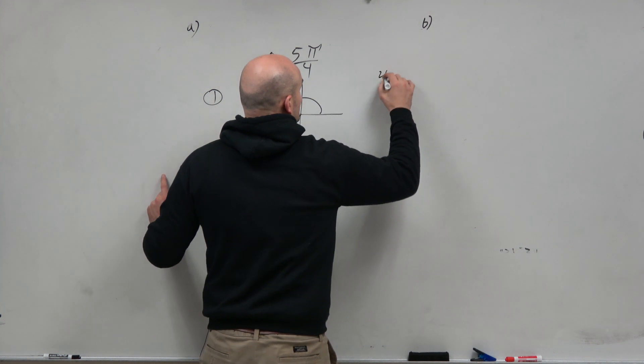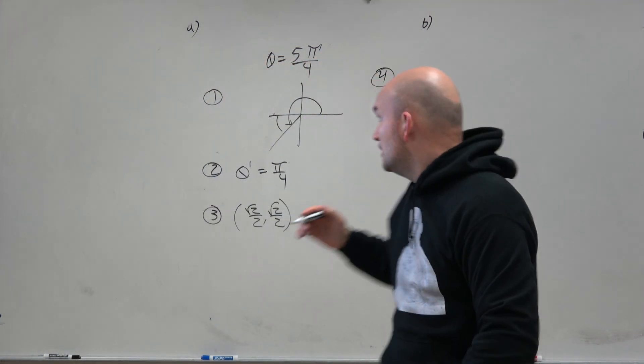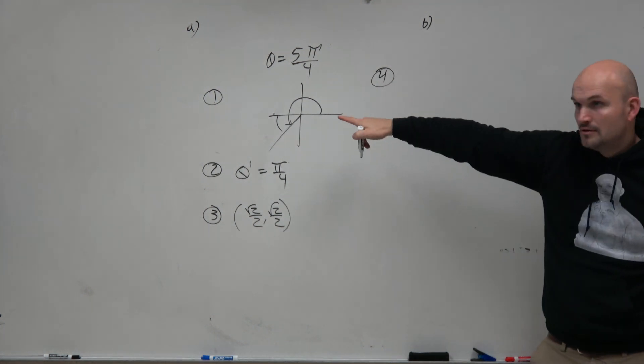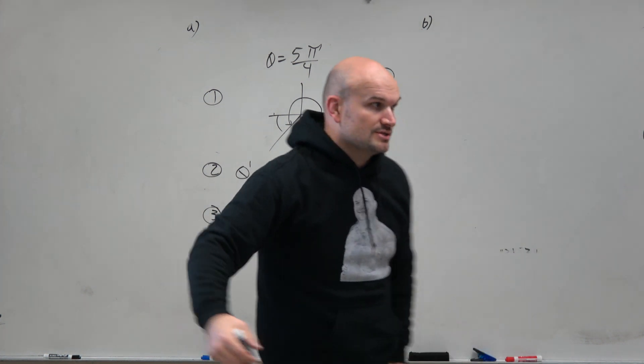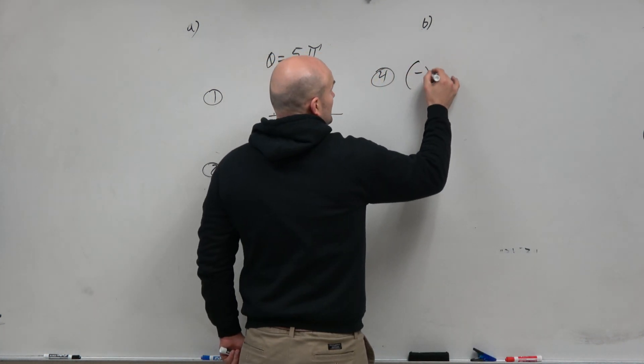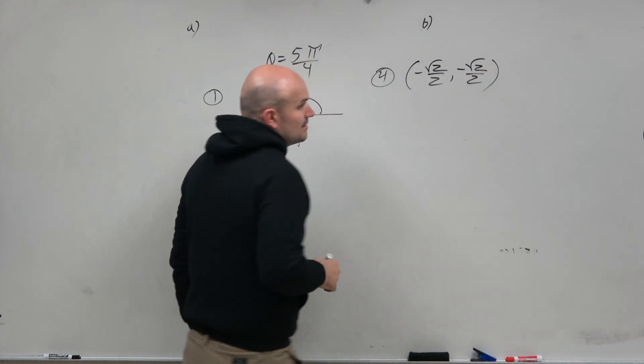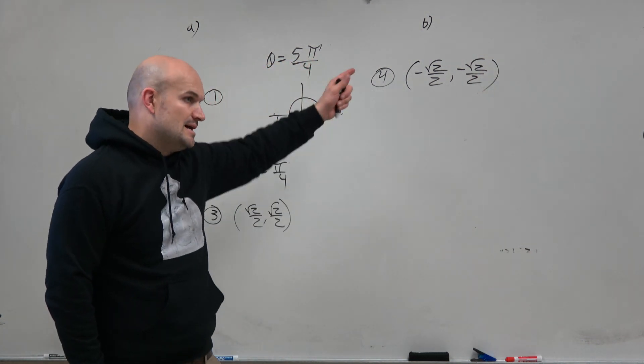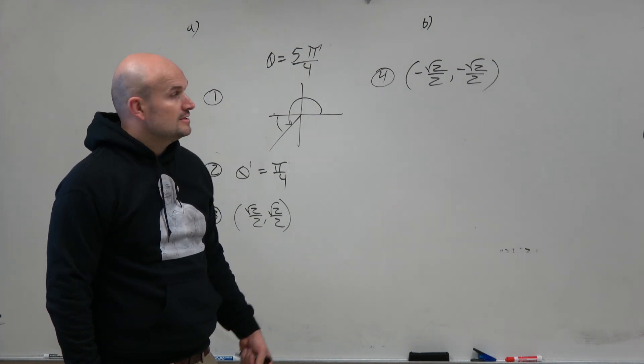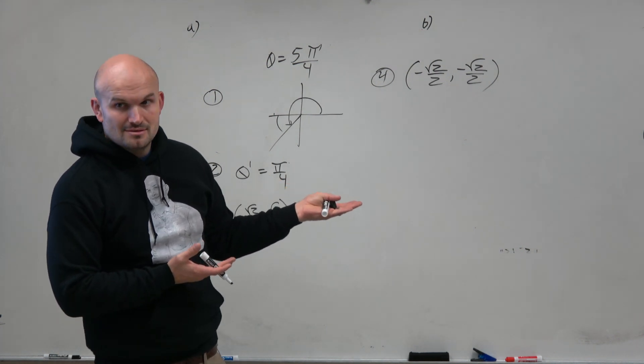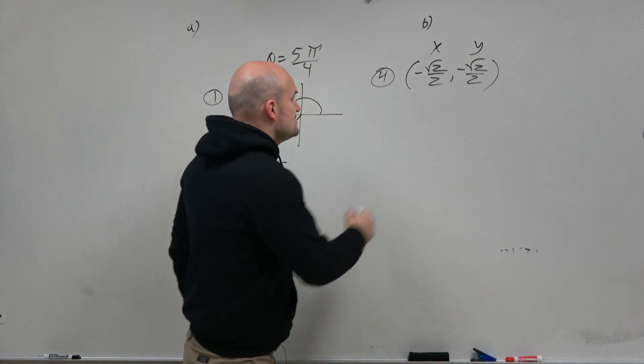Step 4 is applying the signs based on where the angle is. Which quadrant? Third. Third quadrant. So which coordinates are negative in that third quadrant? Both of them. So when we evaluate the six trigonometric functions, we're going to use that point. Can we now evaluate the six trigonometric functions? Yeah, based on what we know, that's x and y.